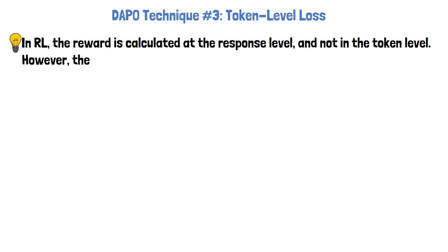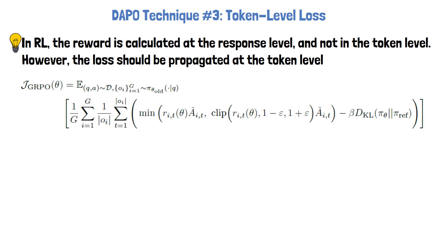However, since the model generates one token at a time, the loss needs to be propagated at the token level to guide the model's learning step by step. In GRPO, we can see we calculate a loss for each token in the response. This is the token level loss.